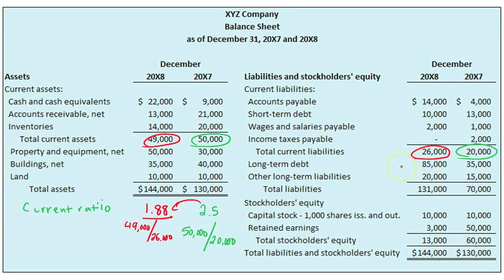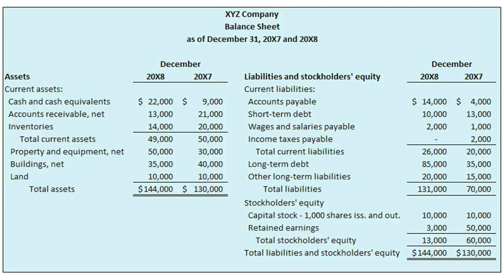Maybe you noticed that XYZ's accounts receivable dropped significantly, declining by $8,000. This drop could be due to better collection efforts, stricter lending policies, bad debts, or simply fewer sales. To really answer this question, we'd want to review XYZ's income statement focusing on sales figures and bad debt expenses, and the statement of cash flows to see the amount of cash collected from customers this year compared to last year. But at least it begs the question: why did accounts receivable decline?